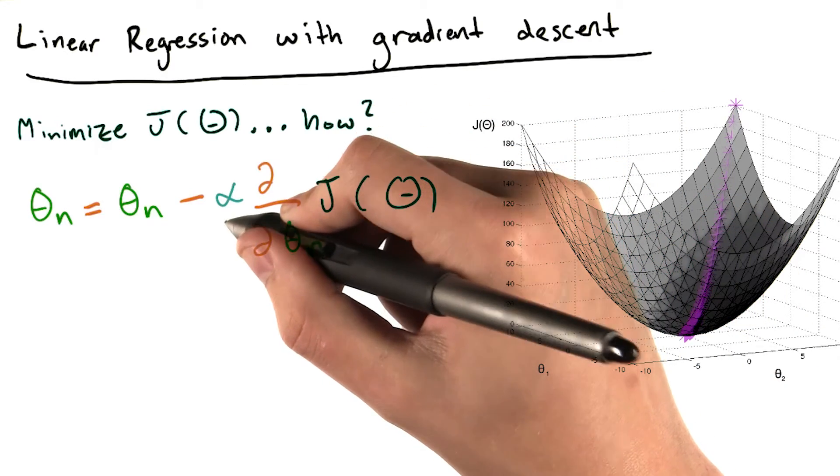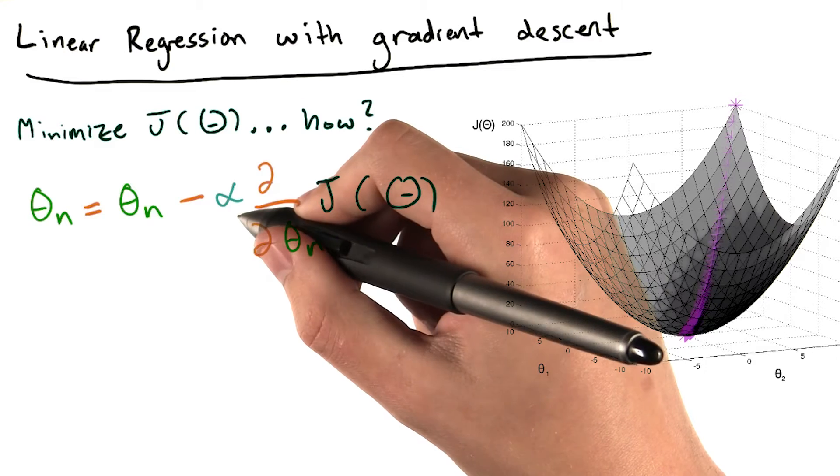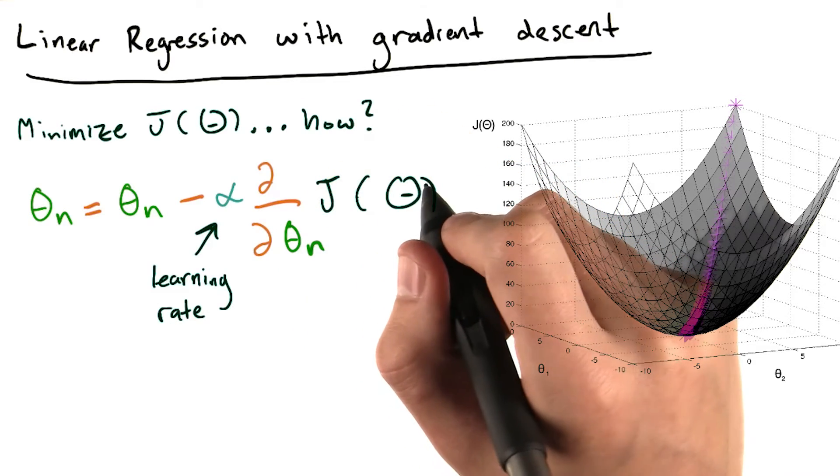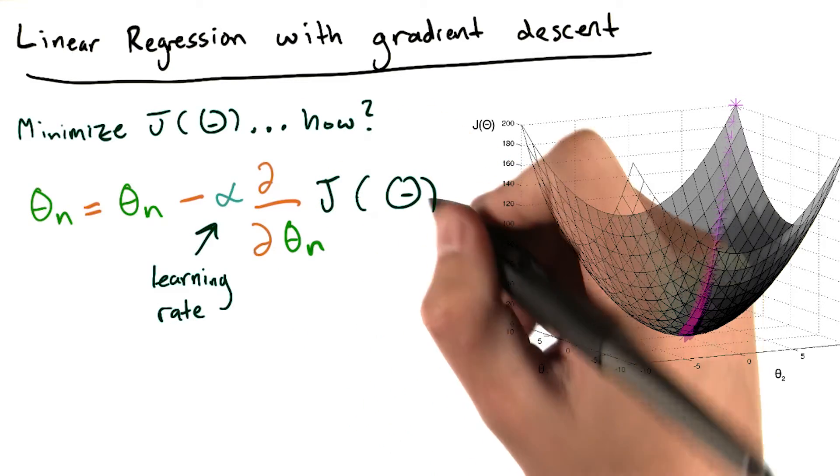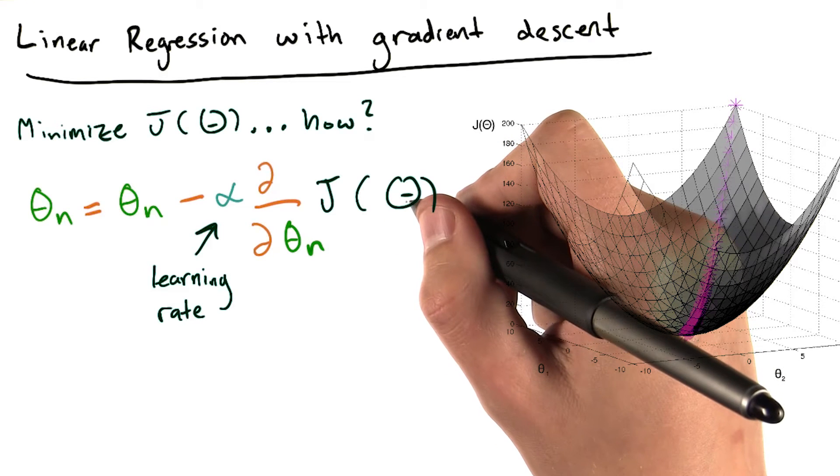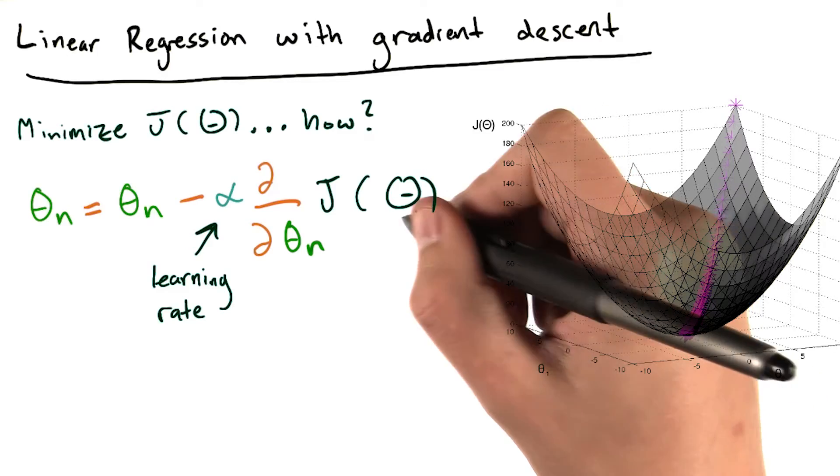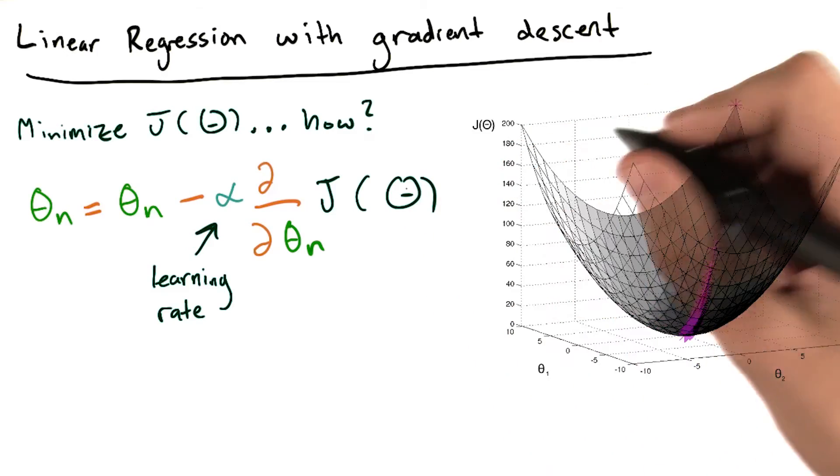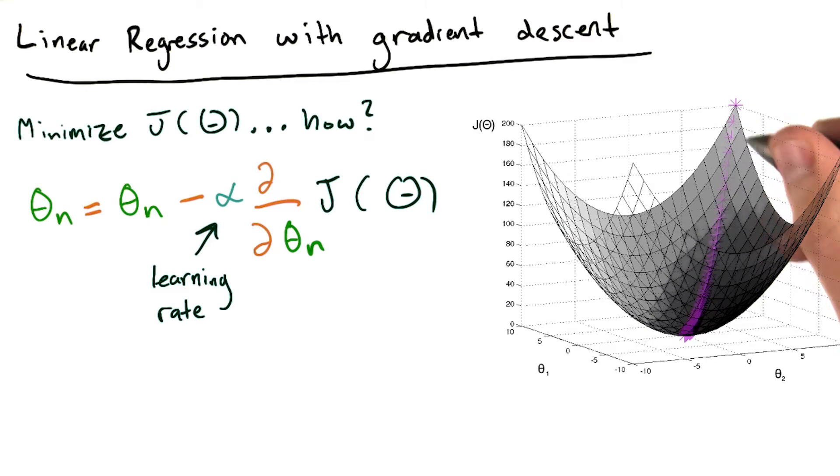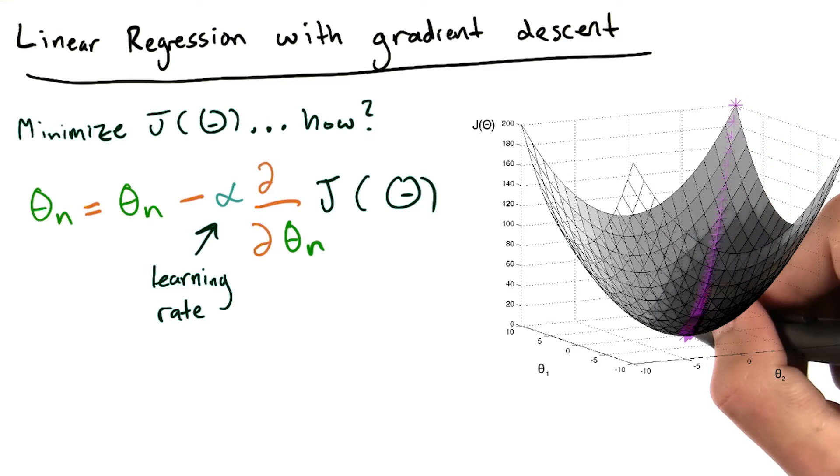The alpha in this equation is a parameter of the algorithm called the learning rate. What we're essentially saying here is that in the space of all possible values of theta, what's the smallest step I can make in a certain direction such that I'll make the value of J smaller. So each time I do this, I'm taking one of these small steps towards the minimum value of J of theta.